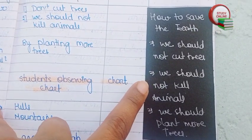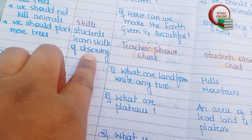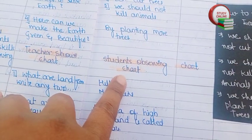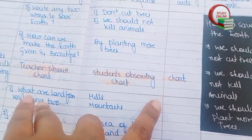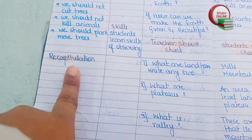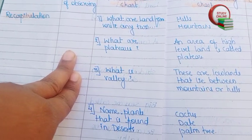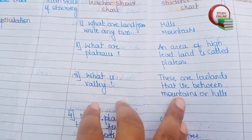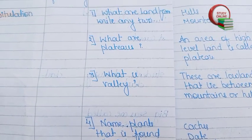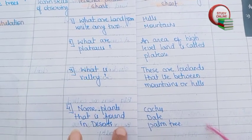Whatever teaching aid you are going to use, you can mention it here. For teaching aids, we have a chart — teacher shows the chart and students observe it. Now here is the recapitulation section. I have added four questions here along with the expected answers from students. This is the recapitulation part of our lesson plan.